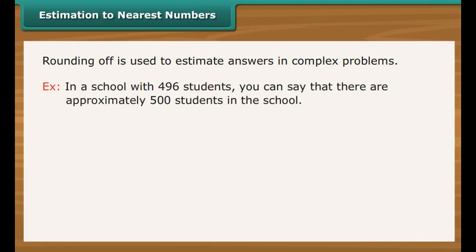Estimation to nearest numbers. As we come across large numbers, performing calculations on them becomes complex. To avoid the complexity, estimation or rounding off is used. For example, in a school with 496 students, you can say that there are approximately 500 students in the school.